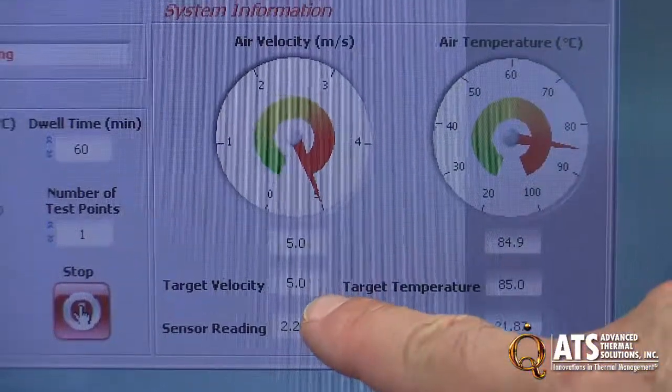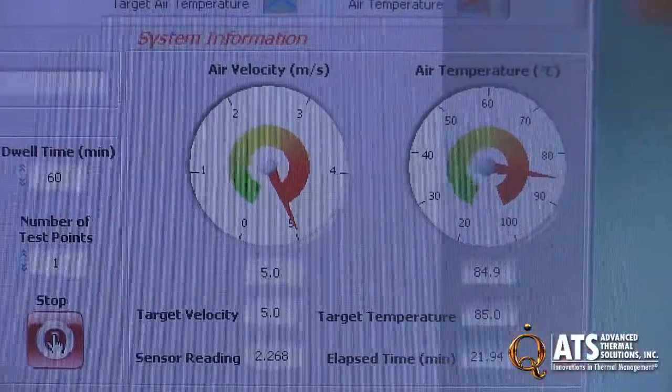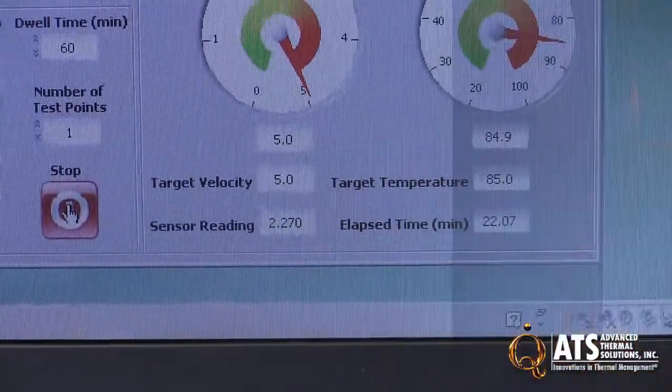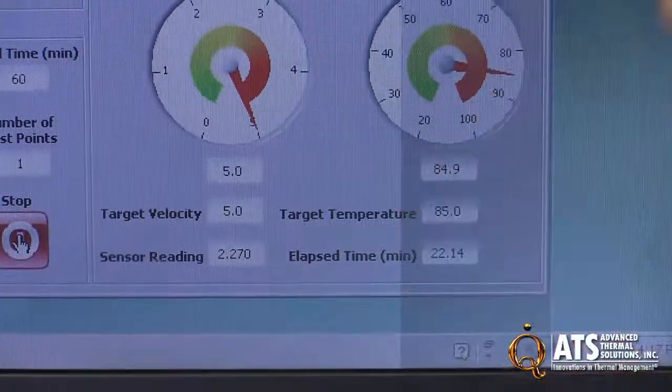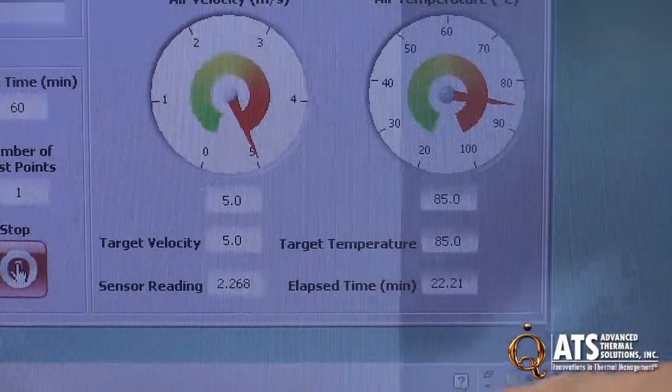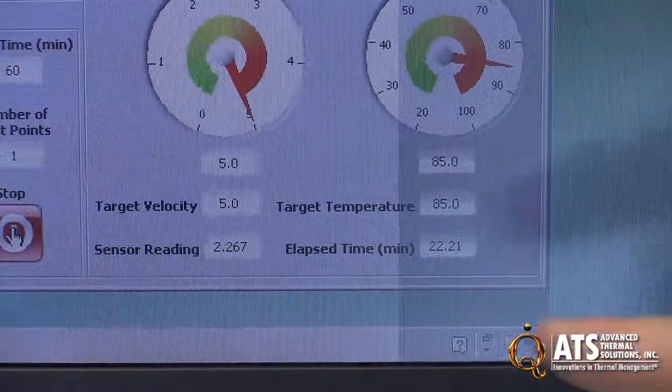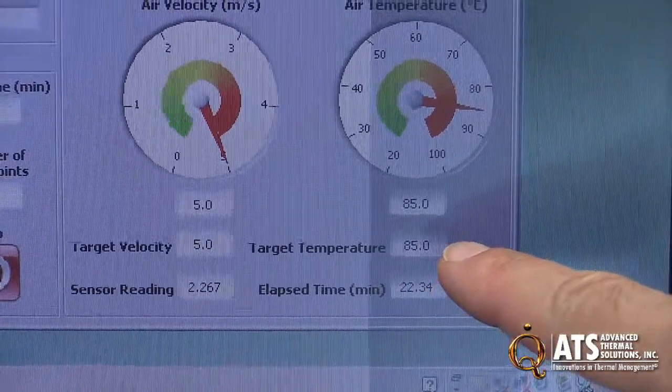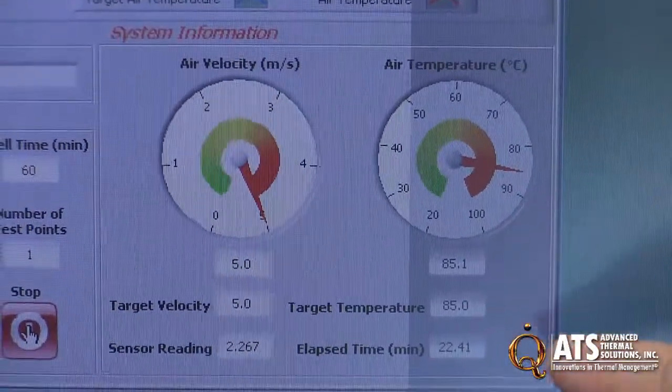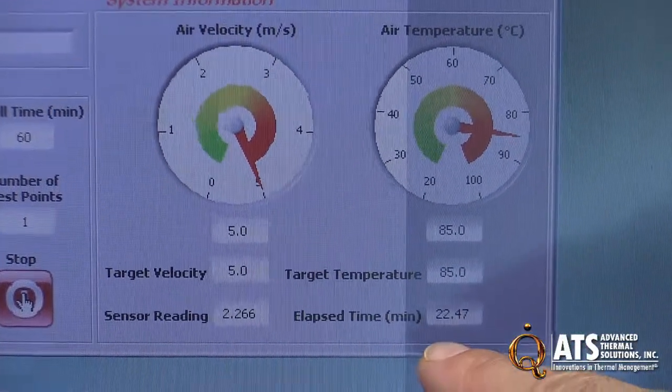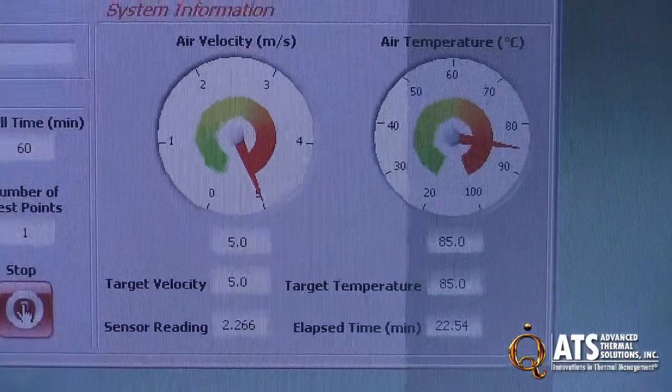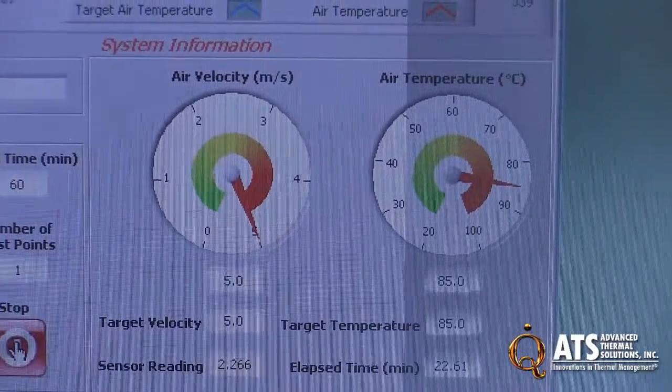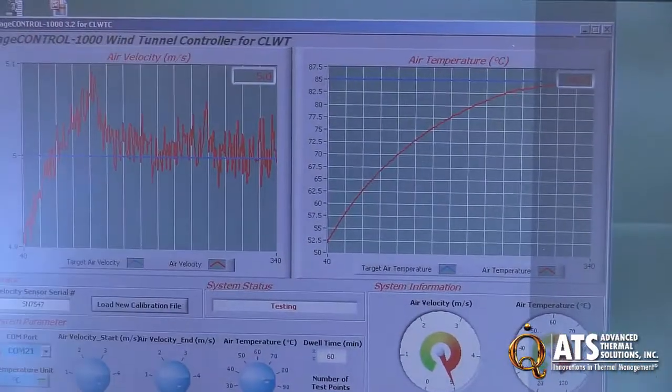That's the target velocity, which is 5 meters per second, and that's the velocity measuring now, which is 5 meters per second. This is the sensor reading in volts—2.268 volts—which the user doesn't really need; it's just for diagnostic purposes. We also have target temperature at 85 degrees C and instantaneous temperature the same at 85 degrees C. Elapsed time is 22 minutes out of 60 minutes. So within 20 minutes we have reached 85 degrees C at 5 meters per second.